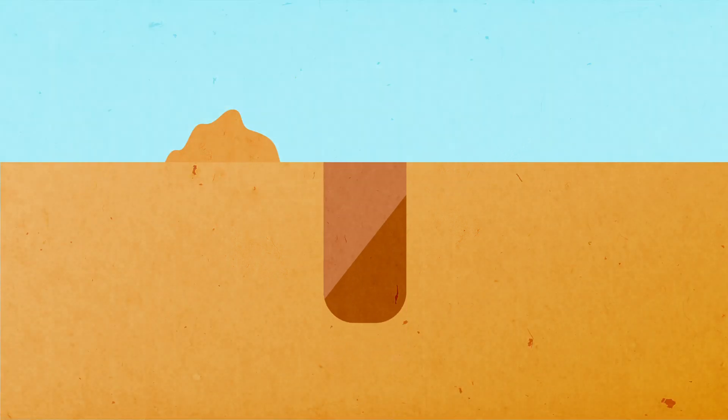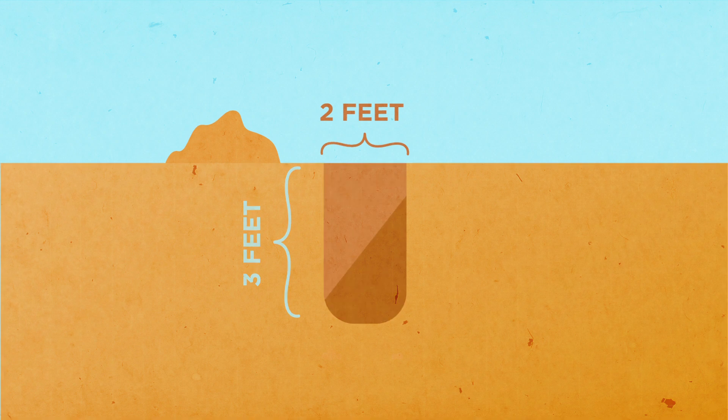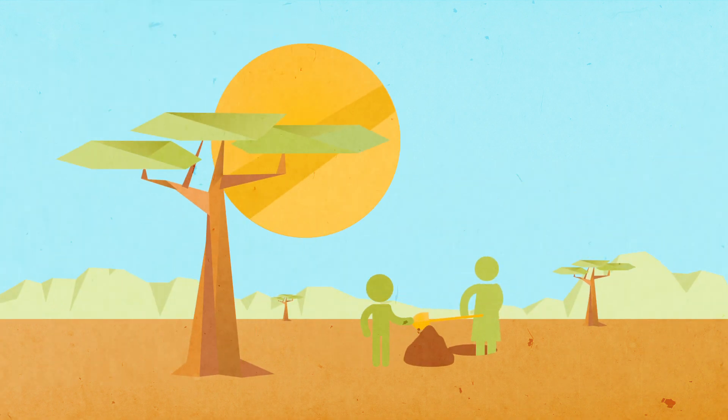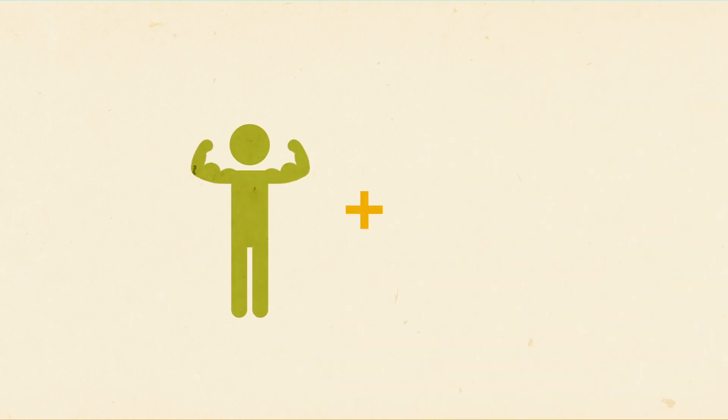So how do you build an Arborloo? Just three feet deep and two feet wide. The small pit is so easy to dig, even a child can do it. Cost, just a little muscle and a shovel.